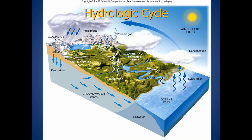Now let's revisit the hydrologic cycle and the four main processes. We have precipitation — the movement of water from the atmosphere down to the Earth's surface in any form. The opposite is evaporation — the movement of water from the Earth's surface back into the atmosphere. We have runoff — the movement of water across the Earth's surface, not in channels. And finally, infiltration — the movement of water from the surface into the subsurface.